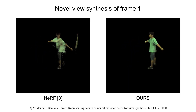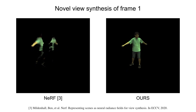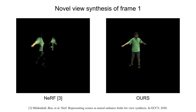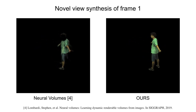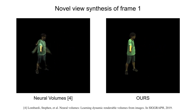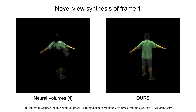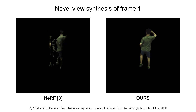We compare our method with top-performing methods on multi-view videos. NeRF learns a continuous function that maps a 5D coordinate to the density and color, but given only four input views, it fails to learn a reasonable 3D representation. Neural Volumes trains an encoder-decoder network on the video and performs better than NeRF, but still gives blurry rendering results. Our method significantly outperforms both NeRF and Neural Volumes.